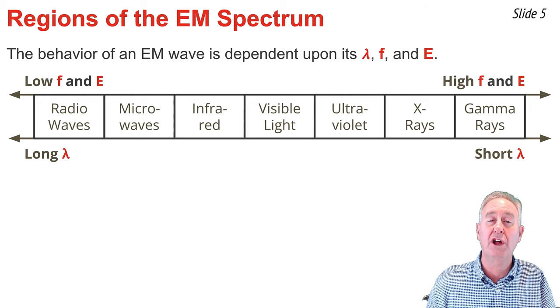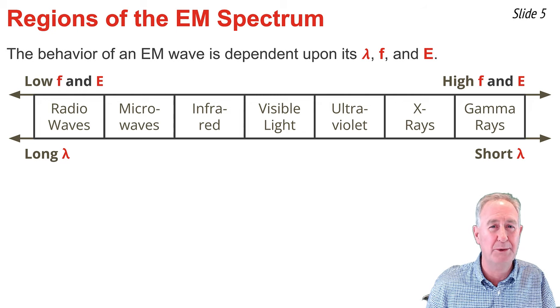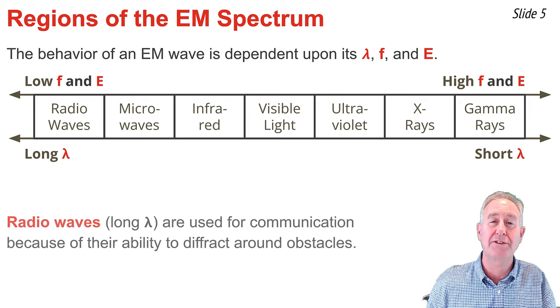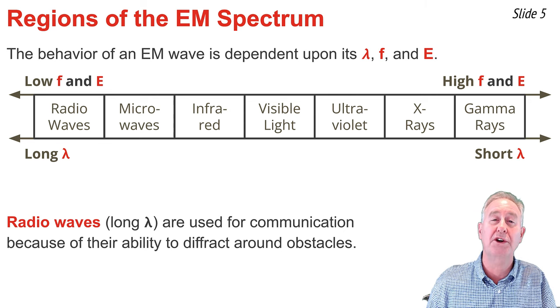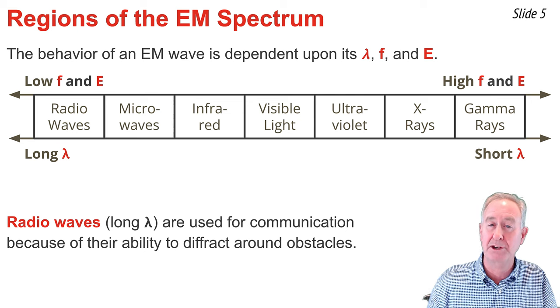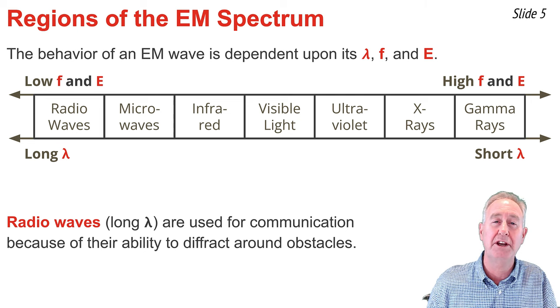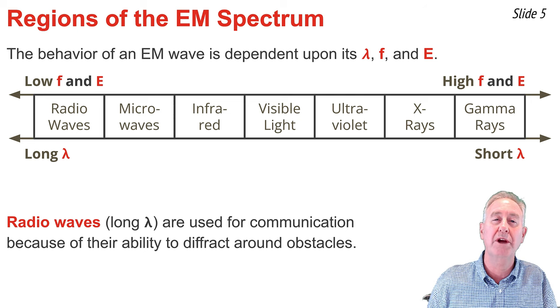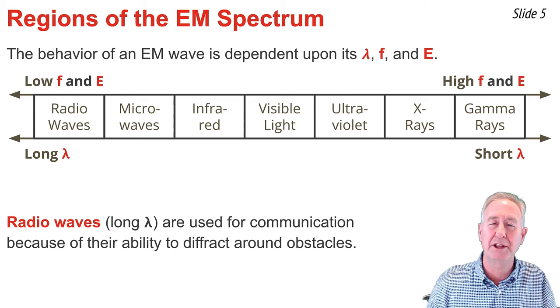As an example, let's consider the long wavelength region of radio waves. We understand that waves can undergo diffraction, that is, they're able to bend around obstacles in their path and even pass through openings. The ability of a wave to diffract is dependent upon wavelength, with longer wavelength waves having a greater ability to diffract.